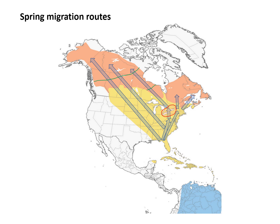Not only is this new information, but it's also very helpful for migration monitoring, because it means there's some longitudinal separation of birds heading to different segments of the breeding ground. By having CMMN monitoring stations across the country, we're actually sampling separate zones of the breeding range at each of those stations.